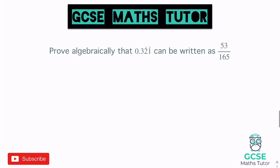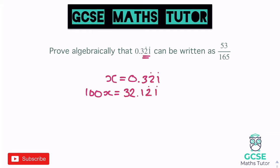Now this question says: prove algebraically that 0.321 can be written as 53 over 165. What we've got here is very similar to earlier questions — there's a decimal that's not recurring at the start, then a repeating pattern of 2s and 1s. So x equals 0.321, with the 2 and 1 recurring. There are only two recurring decimals, so when there are two recurring decimals we times by 100. Multiplying by 100 we get 32.121, with just the 2s and 1s recurring.